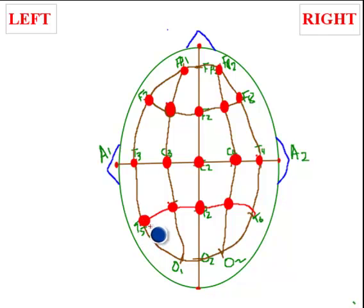We have T5 here. We have T6 here. O1 is here, and O2 is here. So, you have a set of 21 electrodes that are placed, more or less, in a standardized way across the scalp.